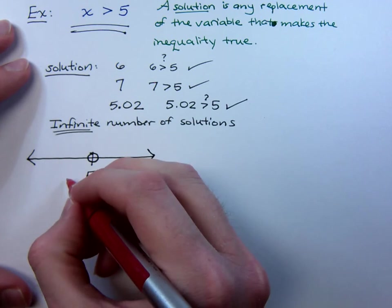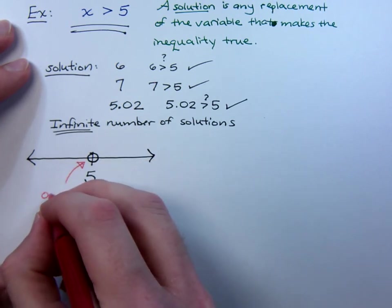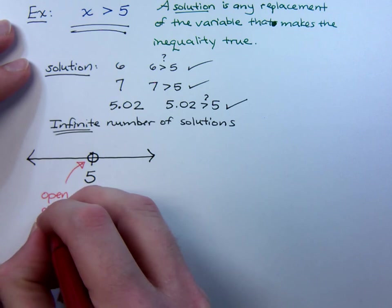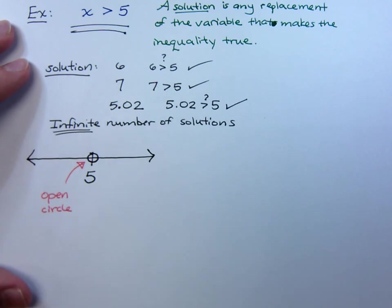Having an open circle will denote that we are starting as close to 5 as we can be without actually including 5.